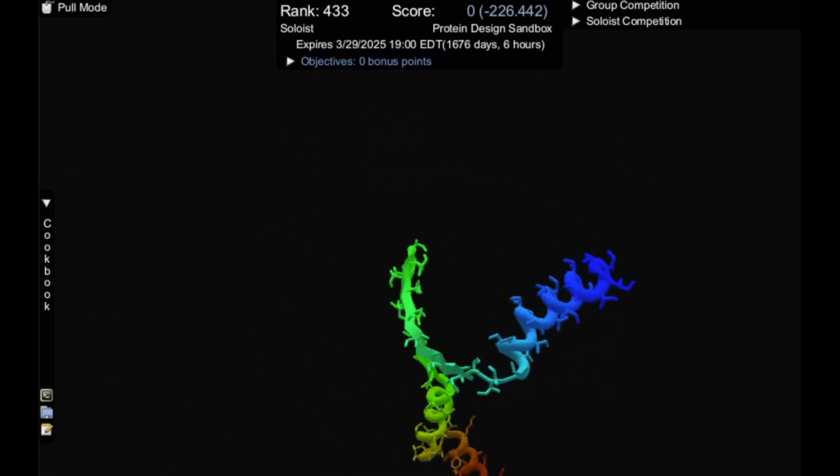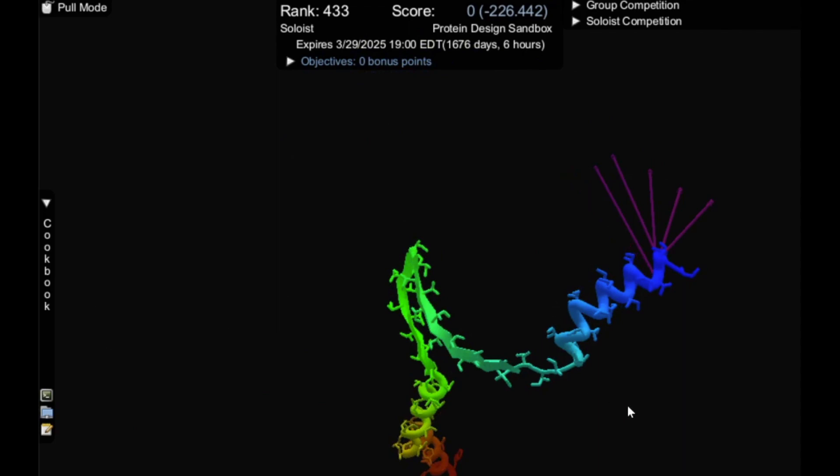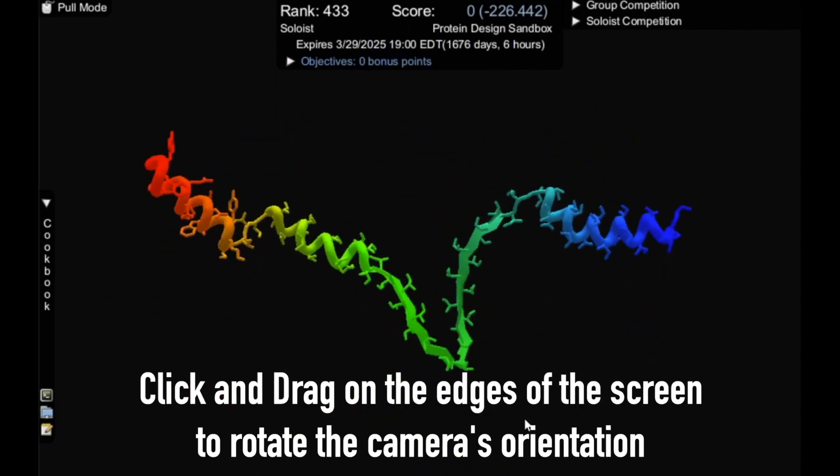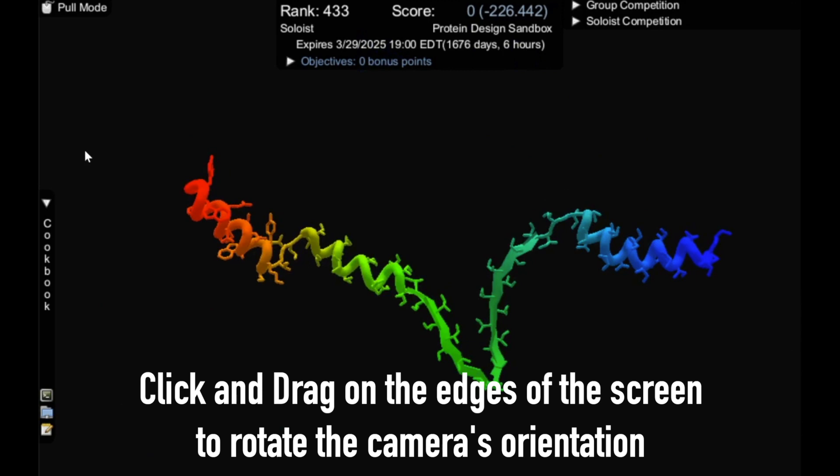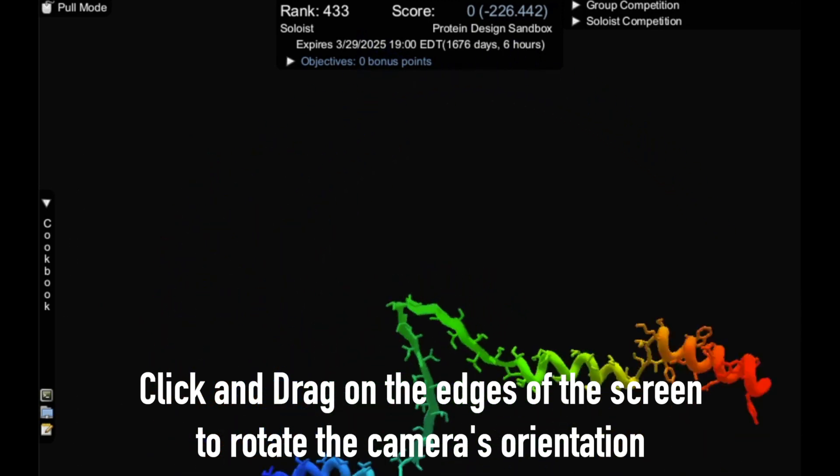Sometimes you'll need a bit more control, so let's go over what else your camera can do. If you click and drag on the edges of the screen, you'll rotate the camera's orientation without moving its position in space.